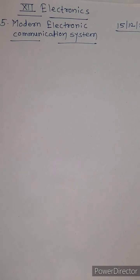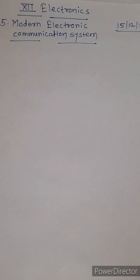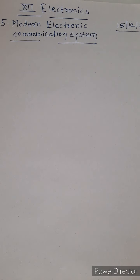Good morning students. In the last lecture we started a new chapter on modern electronic communication systems. We covered what is communication, the block diagram of a communication system, and the different blocks included: input transducer, transmitter, communication channel, receiver, and output transducer, one by one.